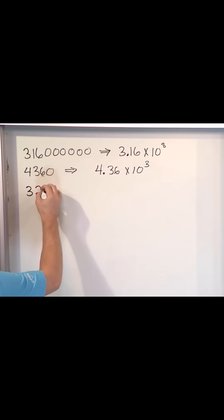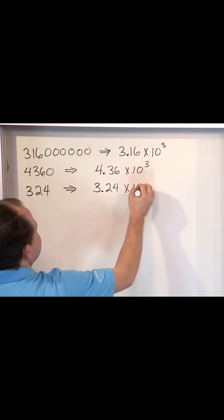What if I wanted to write 324? That number's not too big, so I probably wouldn't write it in scientific notation. But I can. I can just take the first digit, stick a decimal, then the other ones follow, but then I have to multiply times ten.